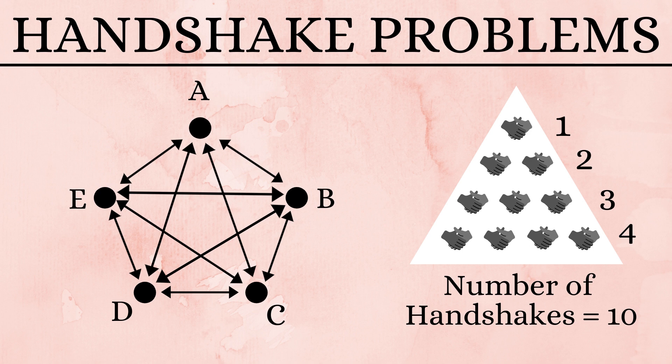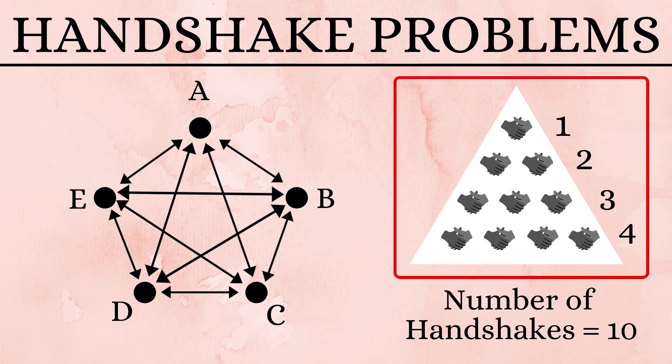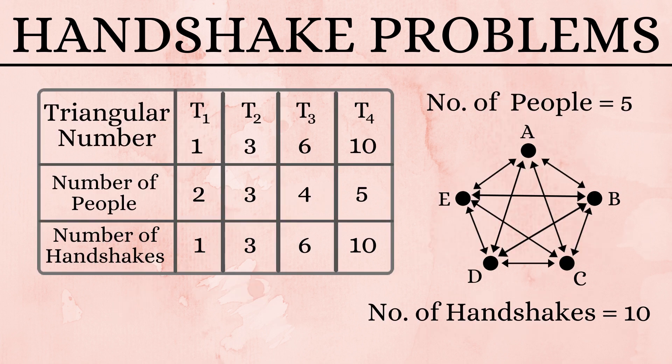Now if we notice carefully, the concept of triangular numbers can be used here. For five people, the number of handshakes can be determined by the fourth triangular number.